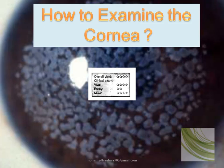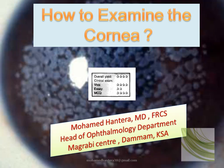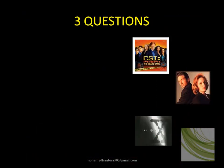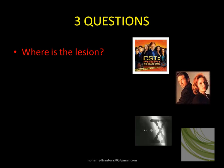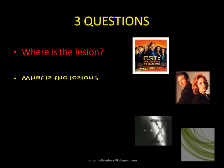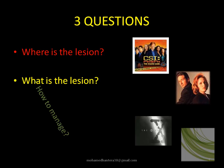Today we will describe a lecture on how to examine the cornea, which is very useful in FRCS exams. There are three main questions to be asked if you have a clinical case or a photo: where is the lesion, what is the lesion, and how to manage.